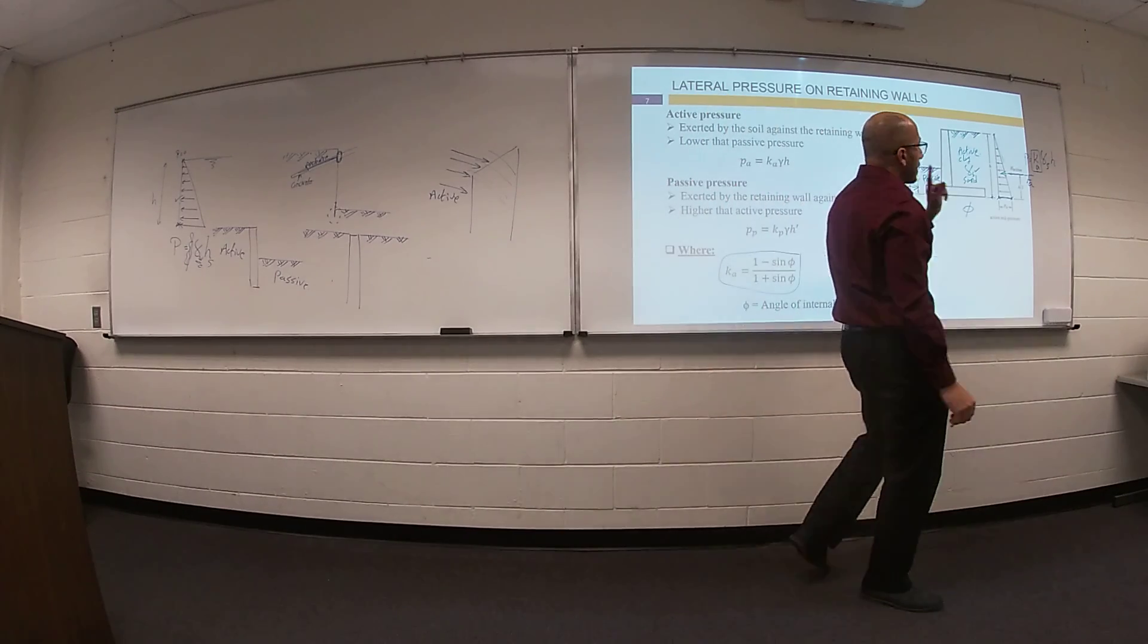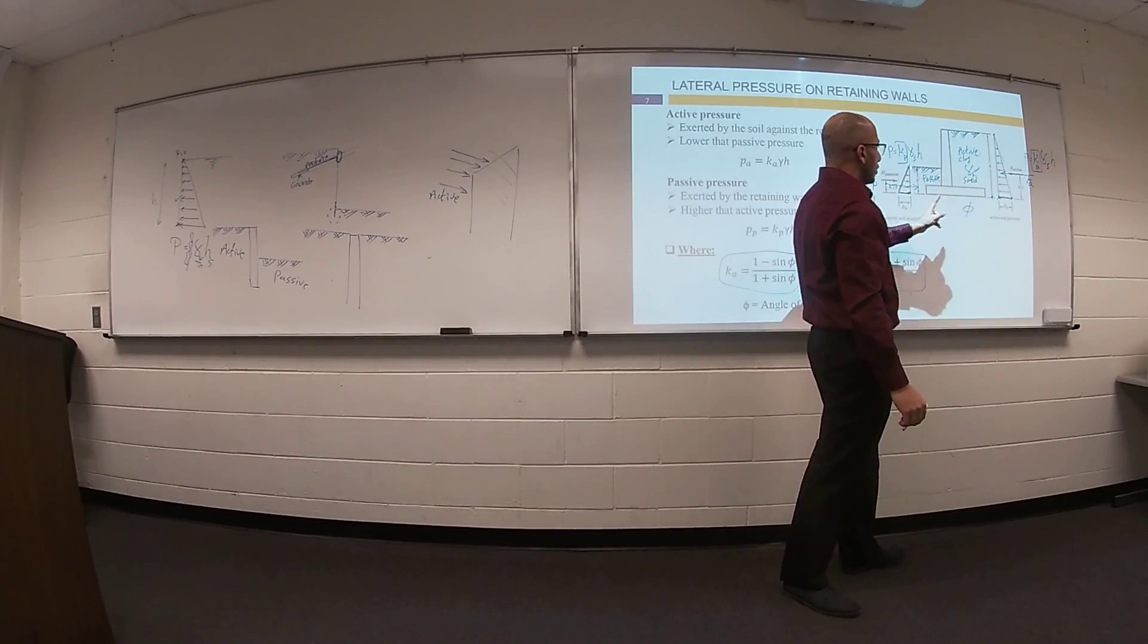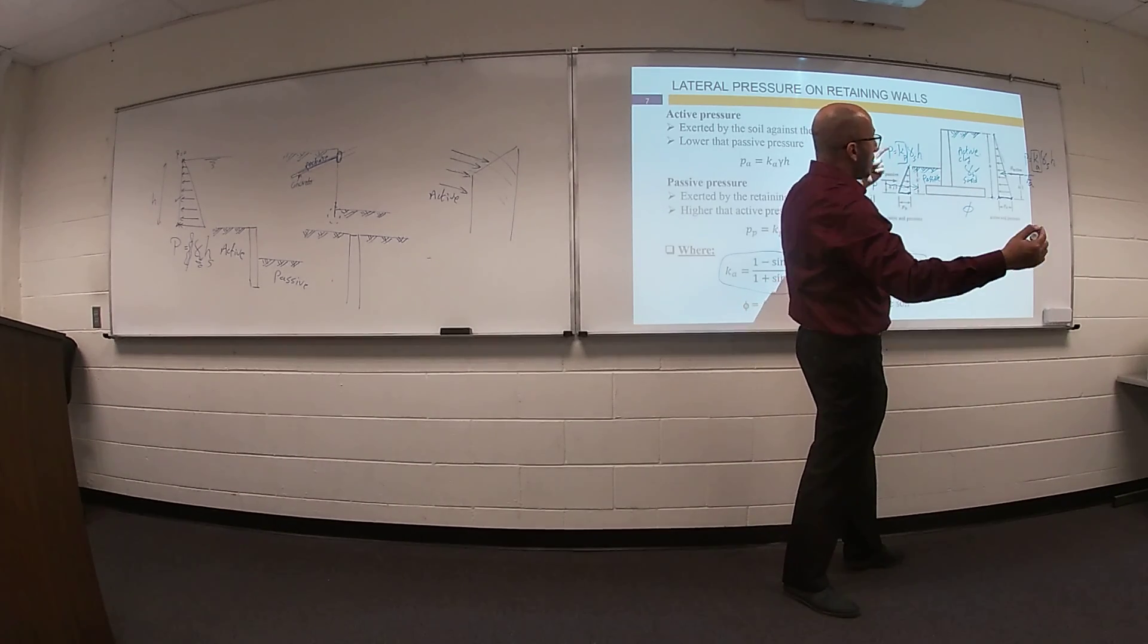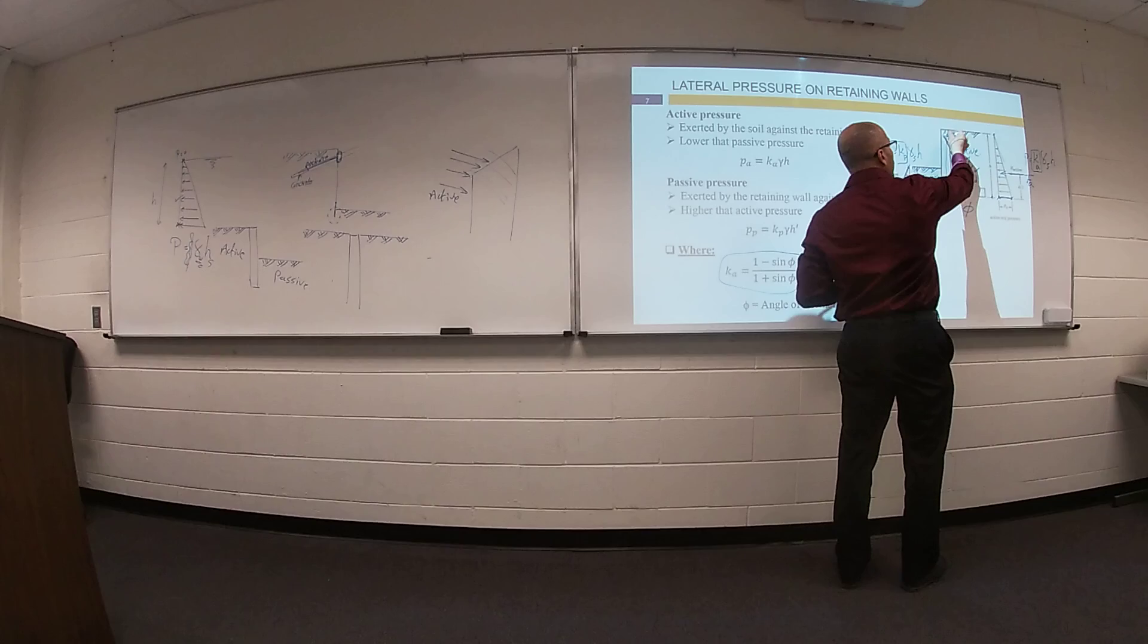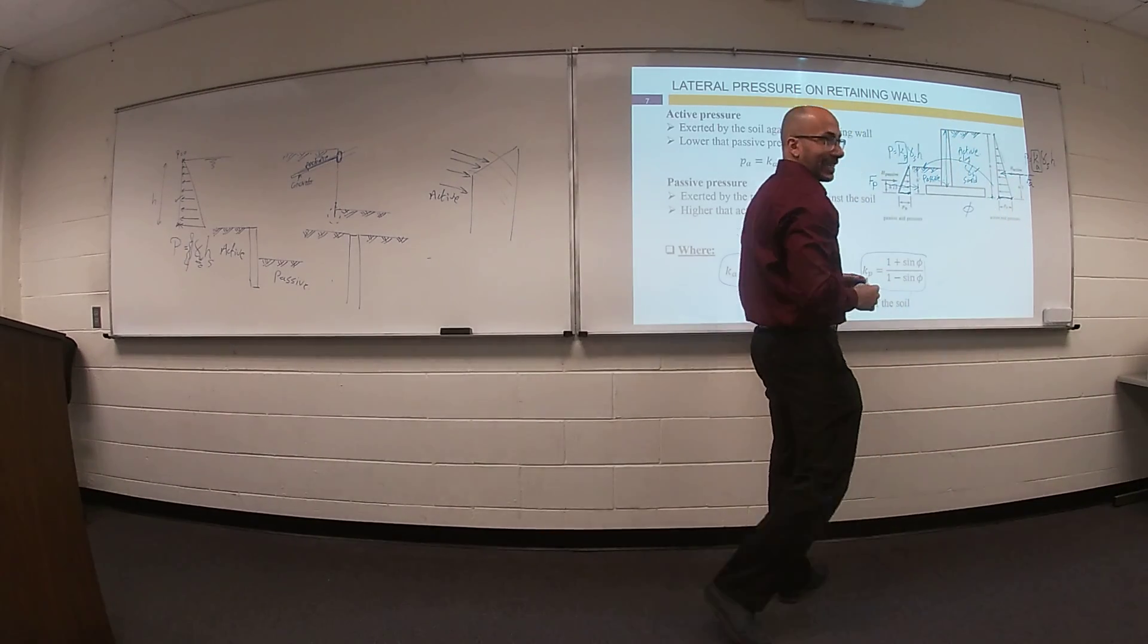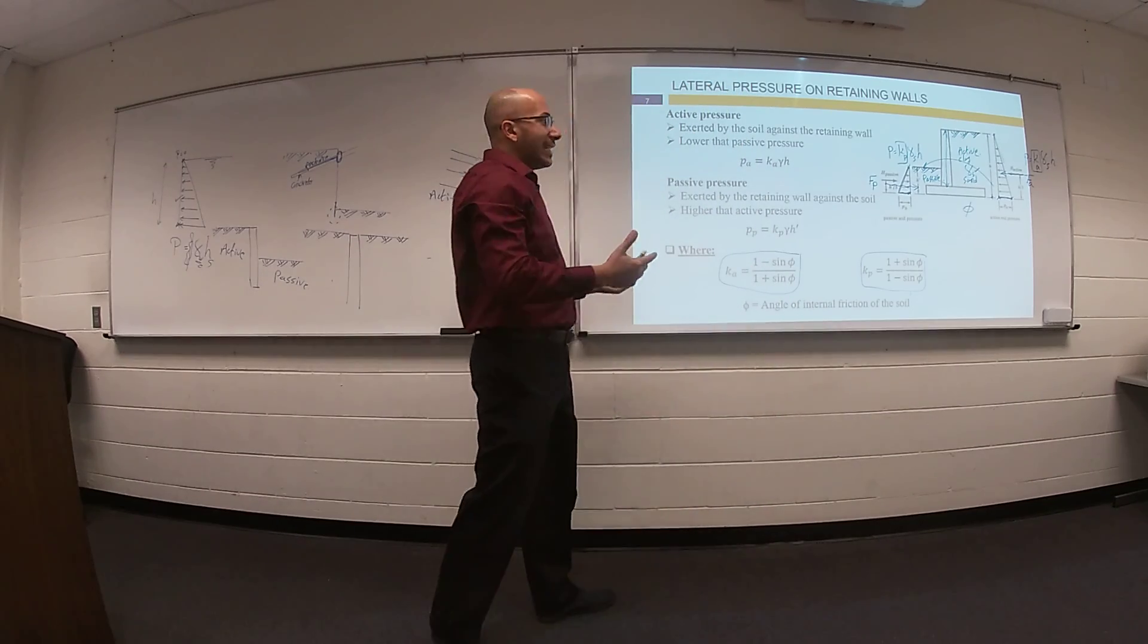Maybe this one is greater than this one. So we can expect sliding of the retaining wall. Maybe this height is too long and this force will make something called overturning of the retaining wall.